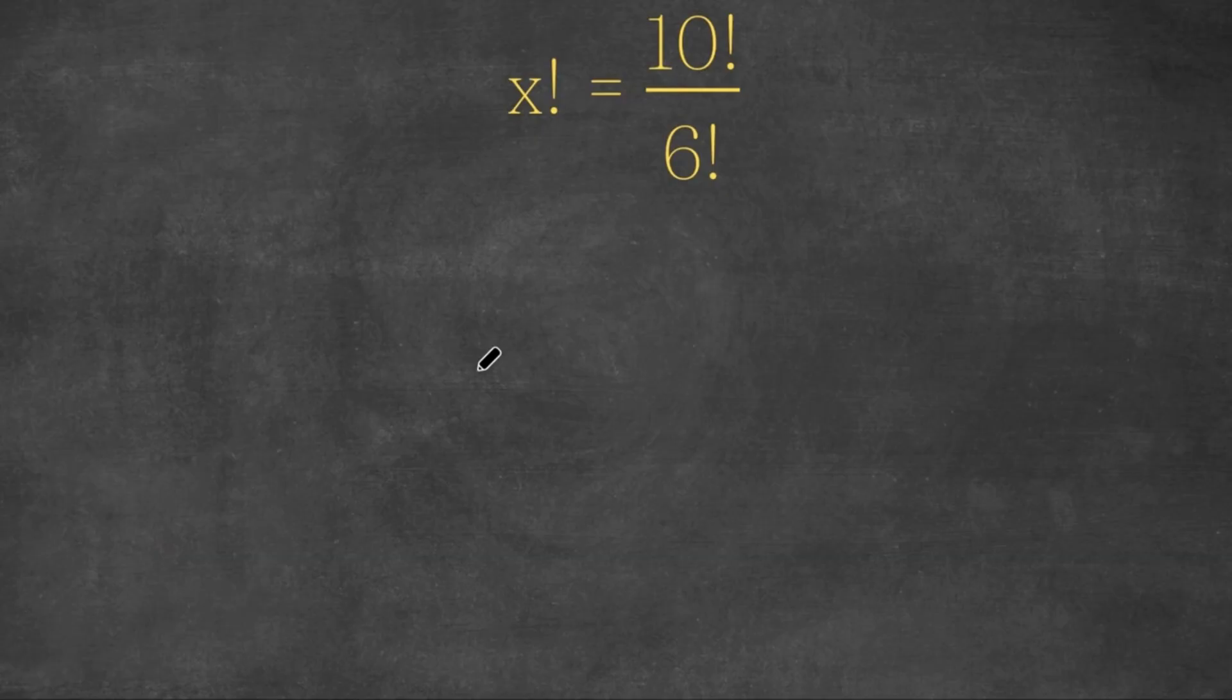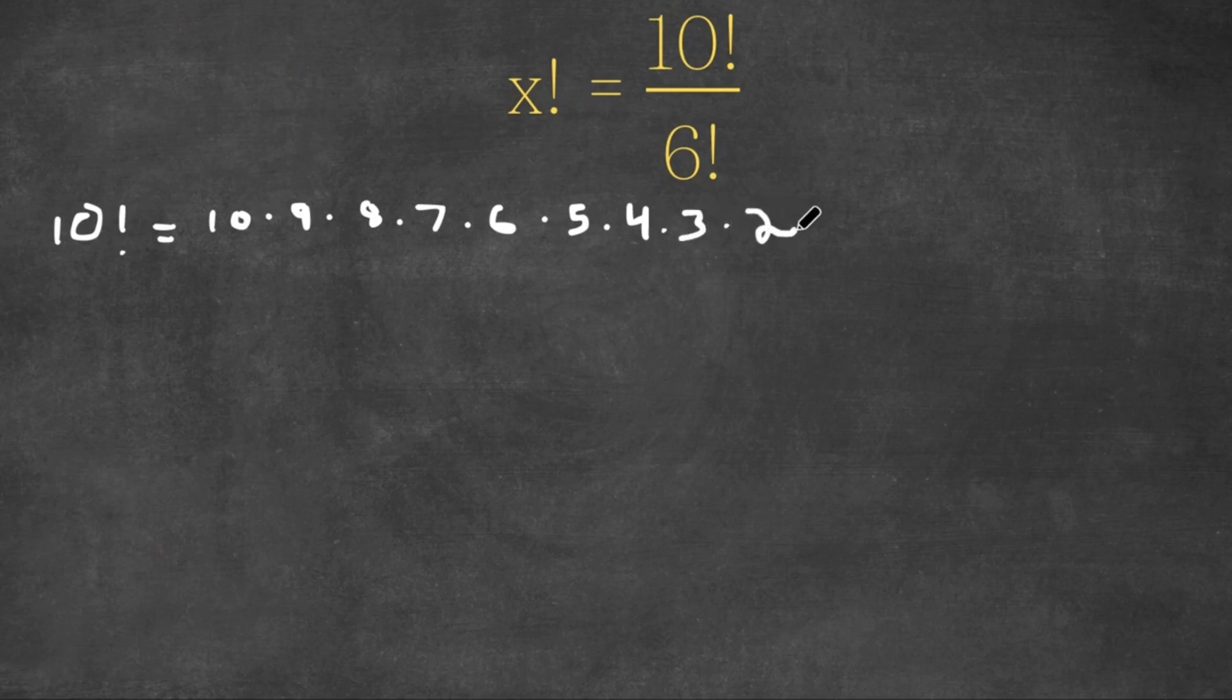Hey guys, welcome back to Qlik Academics. In today's video I'm going to be teaching you guys how to solve this algebraic equation. So we have x factorial is equal to 10 factorial over 6 factorial. Now 10 factorial, this is equal to 10 times 9 times 8 times 7 times 6 times 5 times 4 times 3 times 2 times 1.